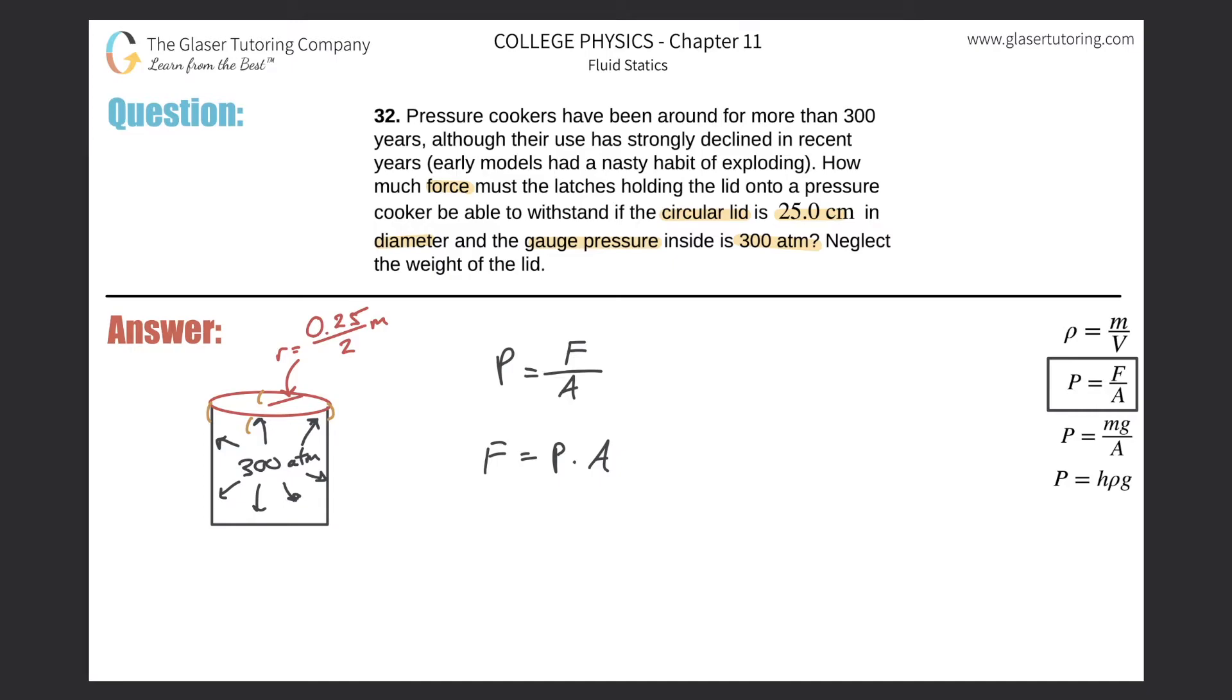And it told us the diameter, right, of the circular lid. What I did here was I converted that to radius. I divided the diameter by two, and then I also converted this into meters. All right. So basically I got everything set up. Now, all we got to do is just calculate force.